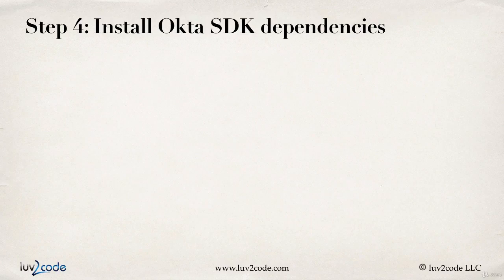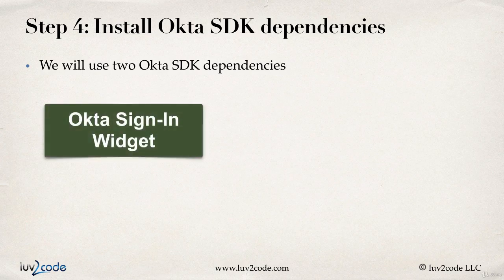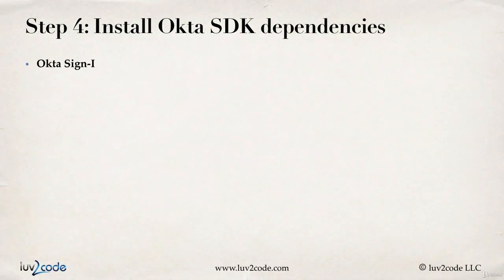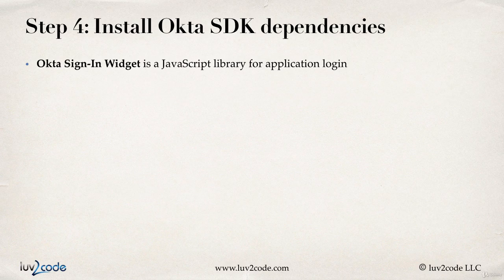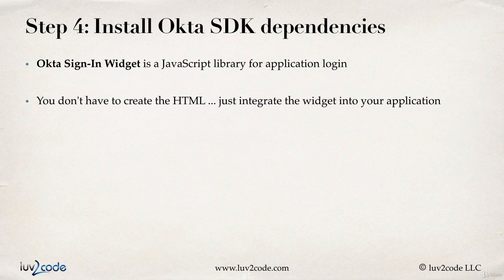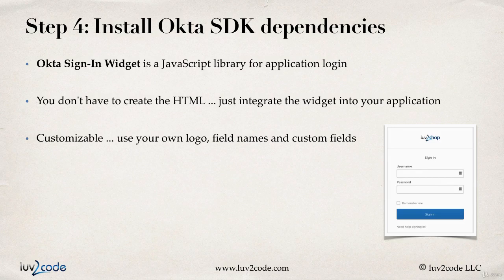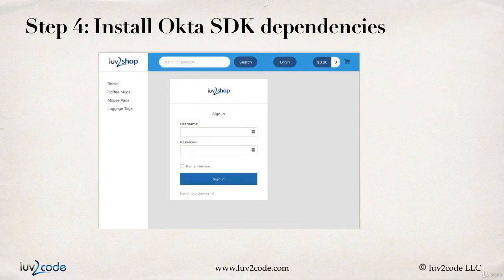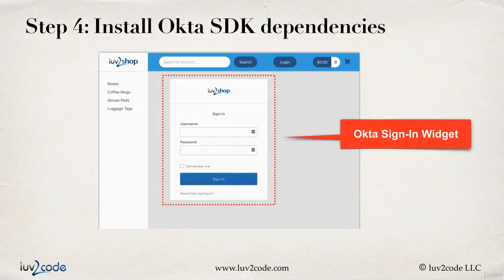Moving to step four, we need to install the Okta SDK dependencies — two of them: the Okta sign-in widget and the Okta Angular SDK. The Okta sign-in widget is a JavaScript library for application login. You don't have to create any of the HTML; we simply integrate this widget into our application, and it's also customizable with your own logo, field names, custom fields, and so on. As you can see in the screenshot, I have the Love2Code logo there — it's very easy to customize. Basically we just drop the Okta sign-in widget into our regular application and it handles username, password, and all the authentication for us.